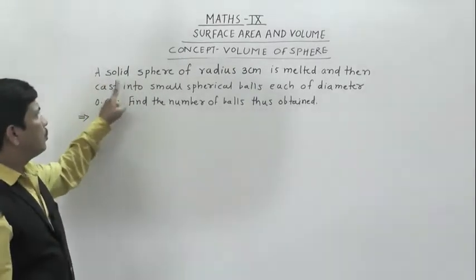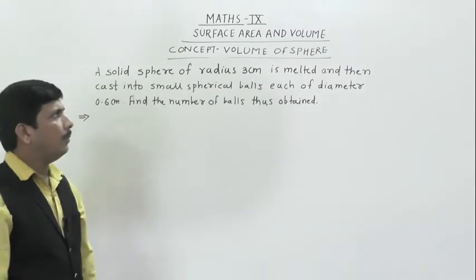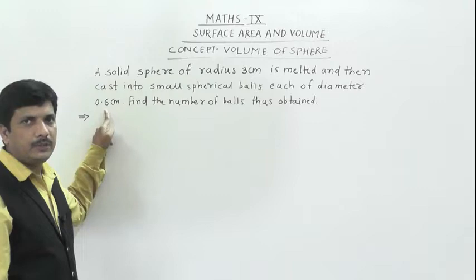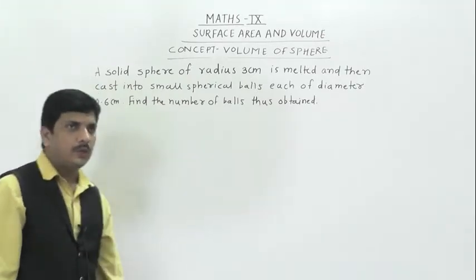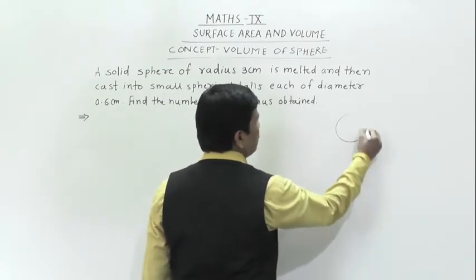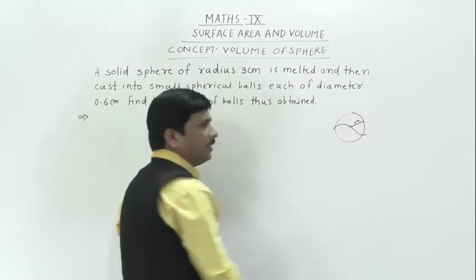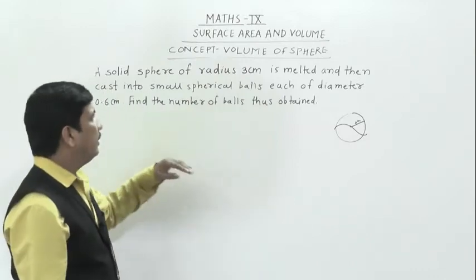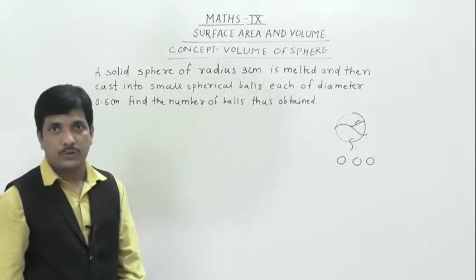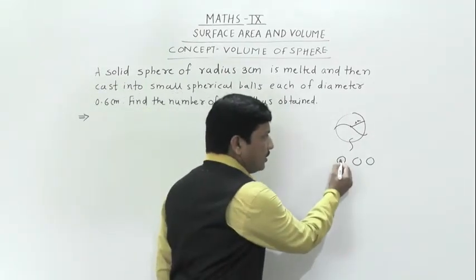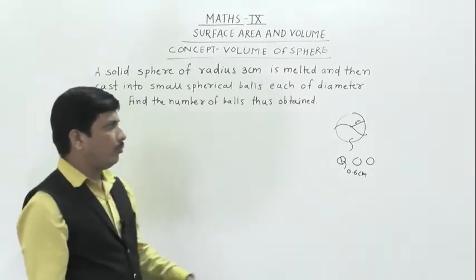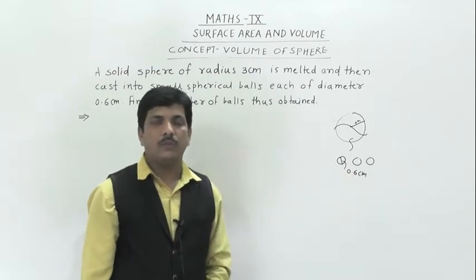The third problem: a solid sphere of radius 3 centimeters is melted and then recast into small spherical balls, each of diameter 0.6 centimeters. Find the number of balls thus obtained. Since the sphere is melted and recast, this is related to volume. The diameter of each small ball is 0.6 centimeters, and we must find how many balls are obtained.